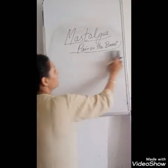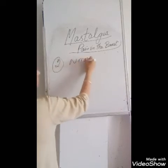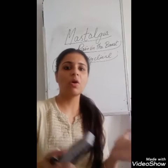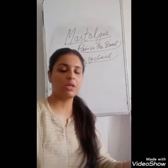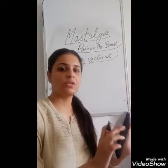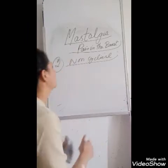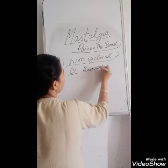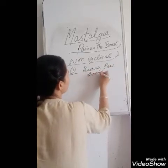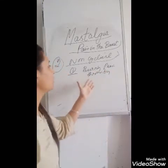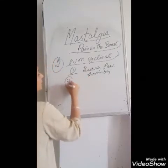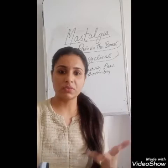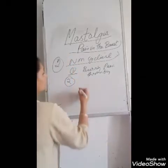The second type is non-cyclical mastalgia. This occurs in women who are in the pre- or post-menopausal period — women who have completed menstruation or are approaching menopause. The character of pain can be anything: burning, throbbing, cutting — any type. It is chronic in nature and is always related with some underlying disease, such as mastitis, a cyst or lump, or malignancy.